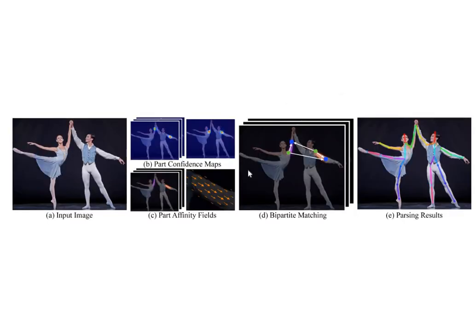The two branches produce two different outputs. The first branch, the part confidence maps, gives heatmaps that tell you where the different parts of the body are — single-channel heatmap images providing an estimate of each part's location. The second branch gives the Part Affinity Fields, which provide directions and tell you which two parts can be combined to create a pair. Then post-processing finds which parts and pairs can be combined to create a human skeleton.